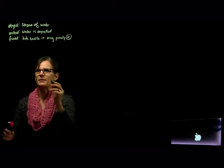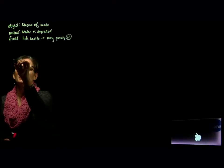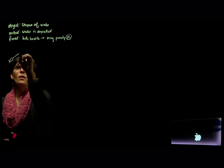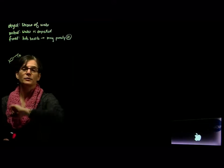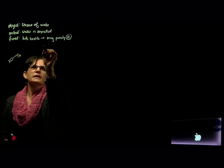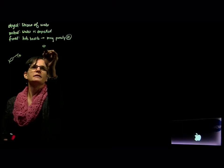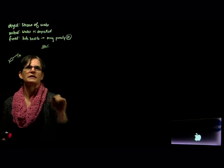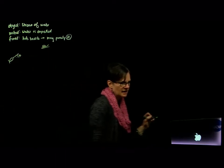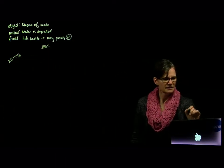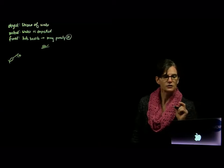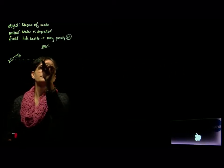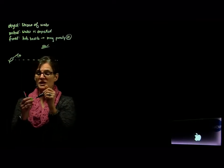Let's draw a picture to make sure we understand what's happening. Here's our fish, and it's going to squirt water at some unknown angle. Here's a little bug sitting on a leaf. It tells us that the leaf is three centimeters above the water, so we know that this vertical distance is three centimeters.